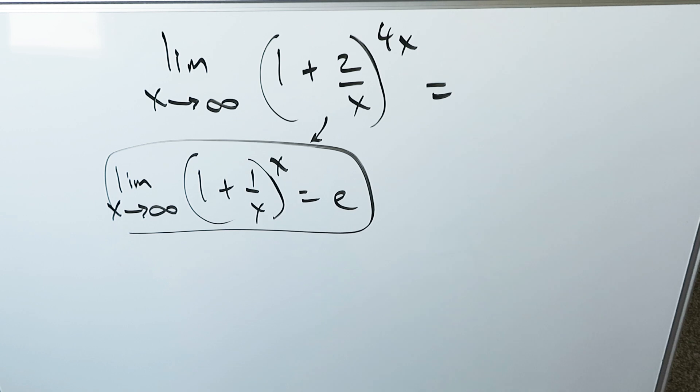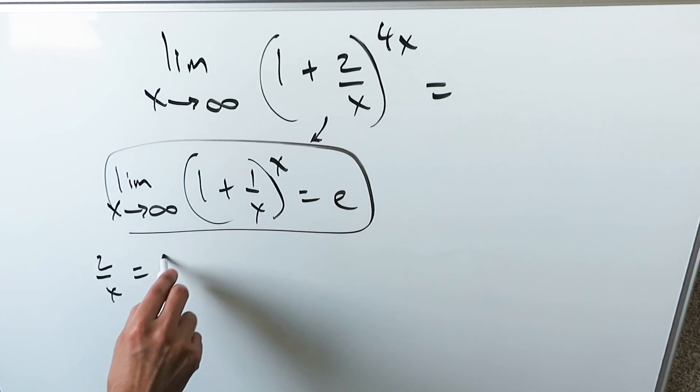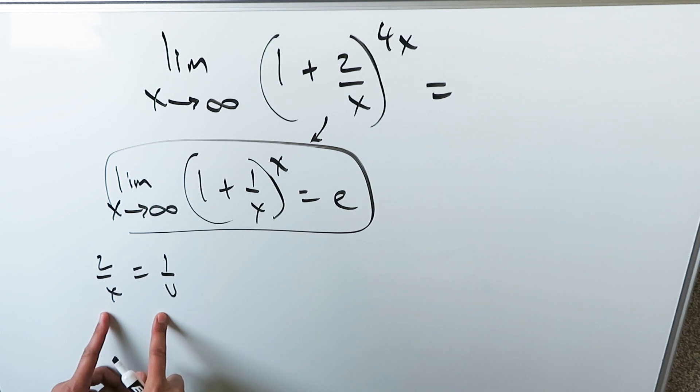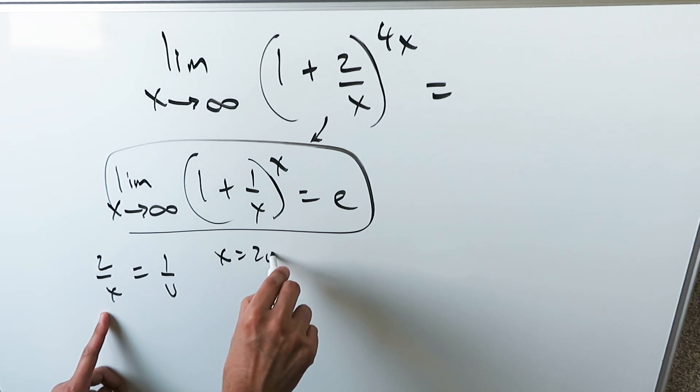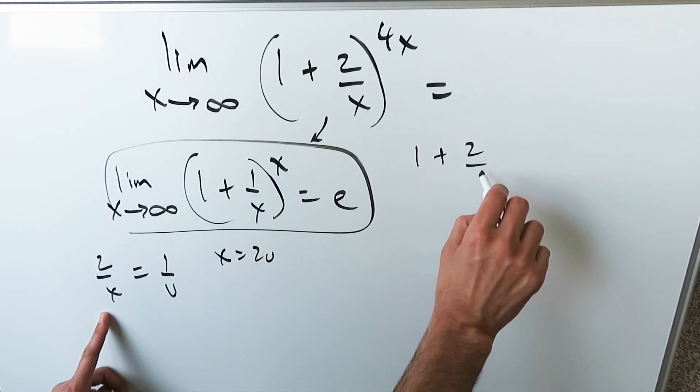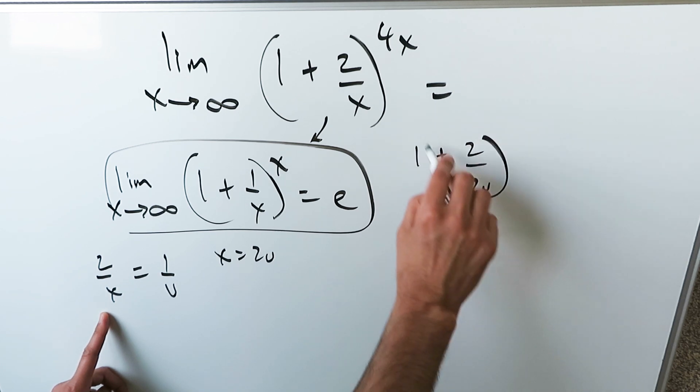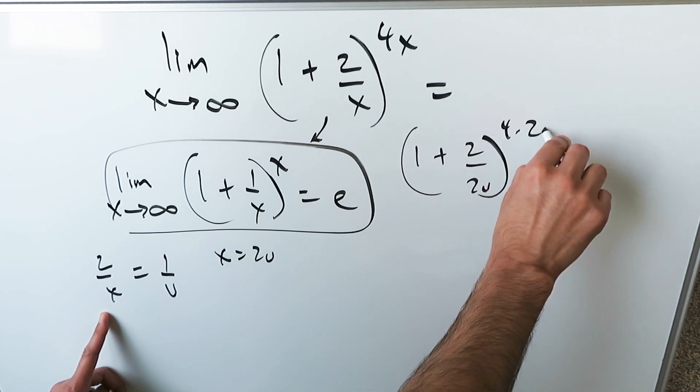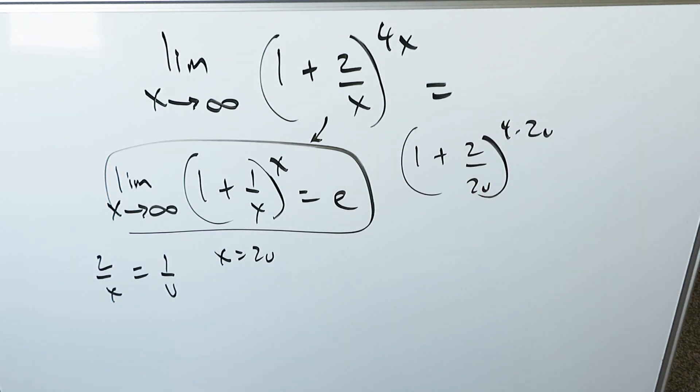You can do so by means of a substitution. Look over here, 2 over x. If 2 over x were to equal 1 over u, I solve for x. x here is equal to 2u, and you substitute it. I'm looking at 1 plus 2 over x, which is 2u. Then I have 4 times 2u, and the limit applies to that.